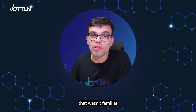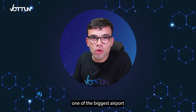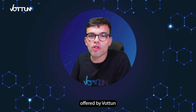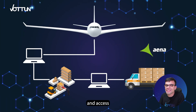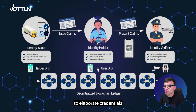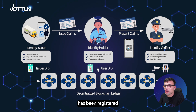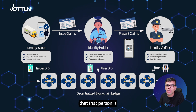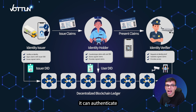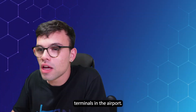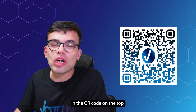Let's find another case study that unlocked the Web3 potential for a company that wasn't familiar with this ecosystem. Aena, one of the biggest airport operators in Spain, has also used the credentials technology offered by Votum in order to improve and manage access to cargo packages. Votum helped the company elaborate credentials that have been registered on the blockchain. Once the credential has been registered, the identity verifier can easily prove that a person is who they say they are — in other words, it can authenticate with real security the management of cargo terminals in the airport. You can find out more about this real case in the QR code on the top right.